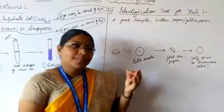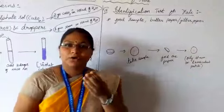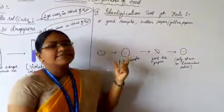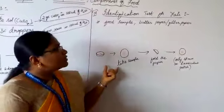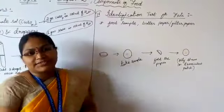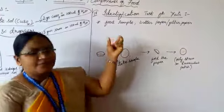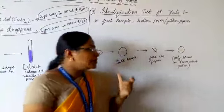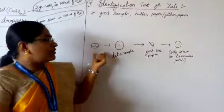For example, fat, milk, some oils like coconut—these all contain fats. How will we do this identification test for fats? You need some food sample which you want to test and butter paper or filter paper. It is a very simple test.